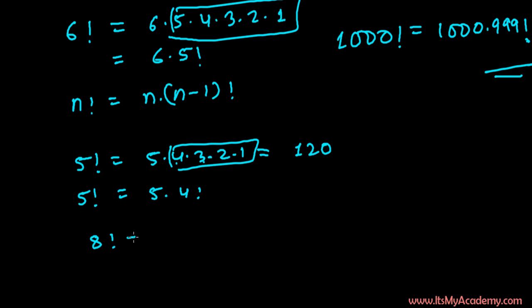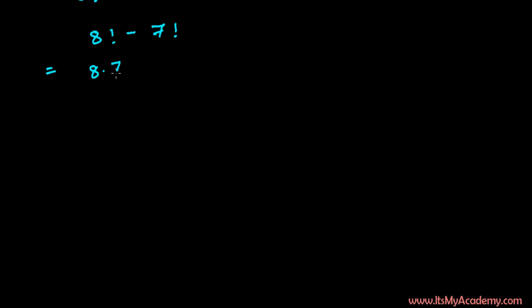let's say I want to write 8 factorial minus 7 factorial. How can I solve this? 8 factorial is actually 8 times 7 times 6 times 5 times 4 times 3 times 2 times 1.